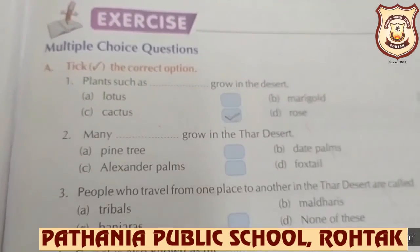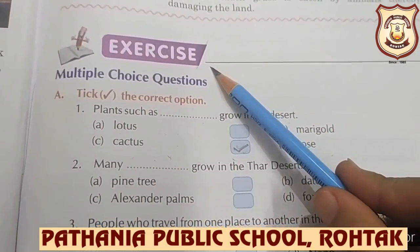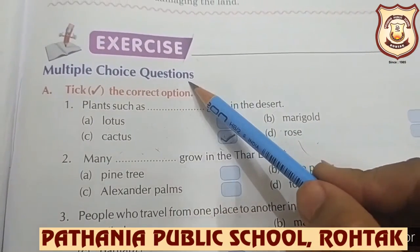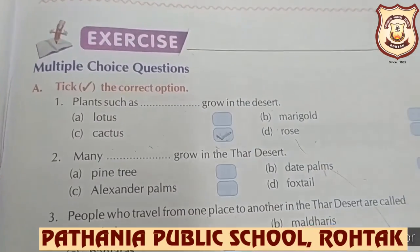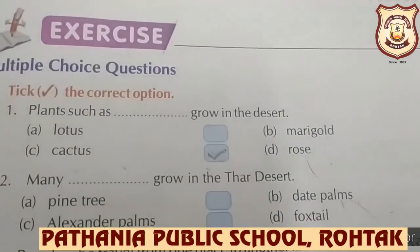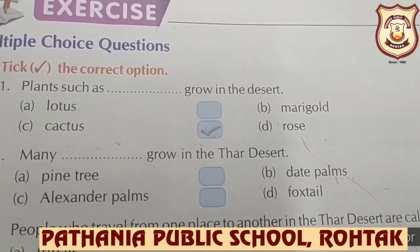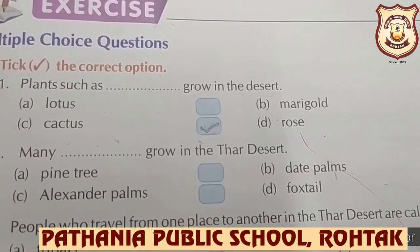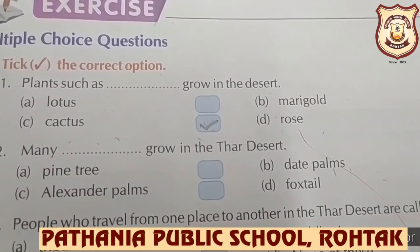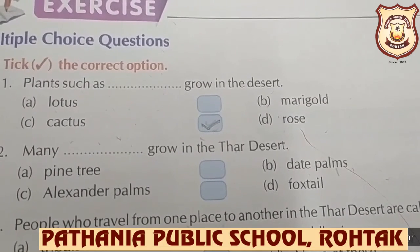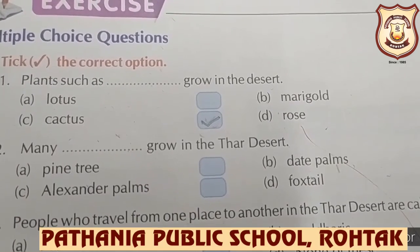From page number 31, chapter number four, exercises part — multiple choice questions. Part A: tick the correct option. Number one: plants such as dash grow in the desert — lotus, marigold, cactus, or rose. The answer is cactus. We find only scattered bushes and thorny shrubs in the western desert, so everybody put a tick on cactus.